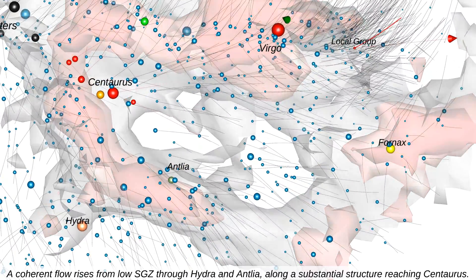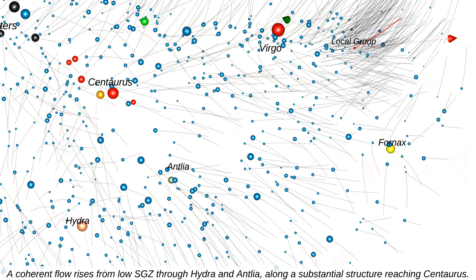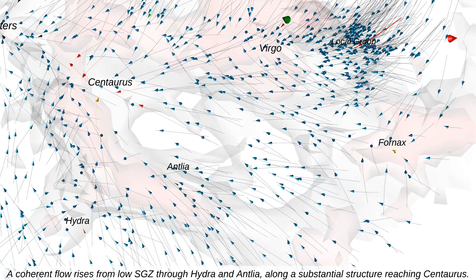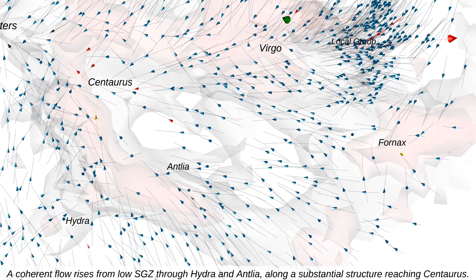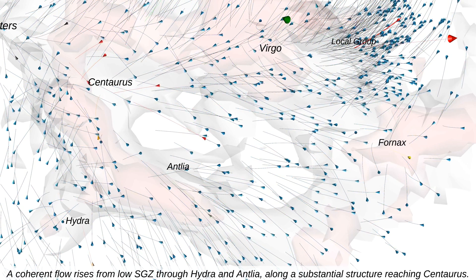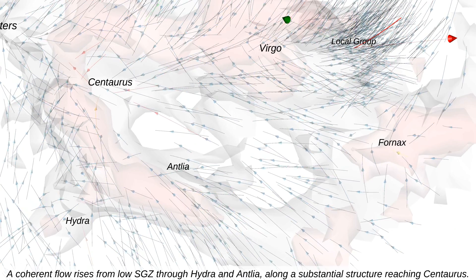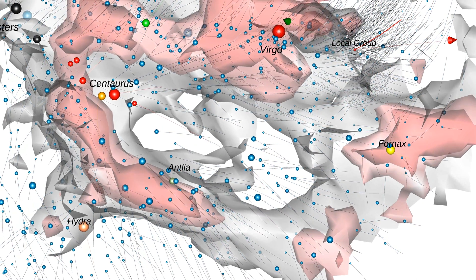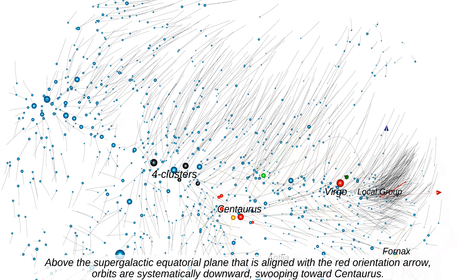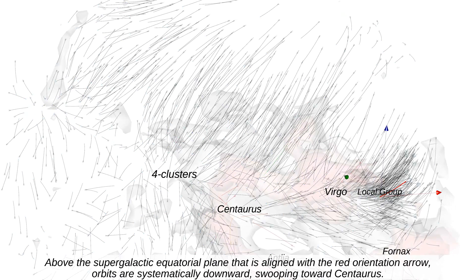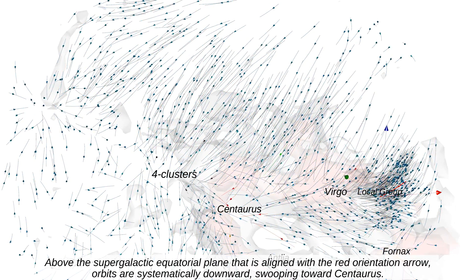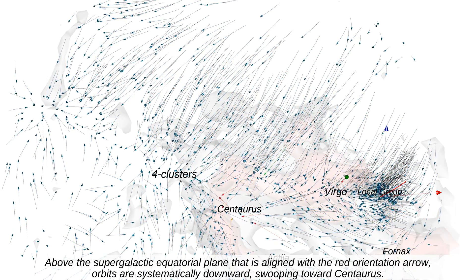A coherent flow rises from low SGZ through Hydra and Antlia along a substantial structure reaching Centaurus. Above the supergalactic equatorial plane — aligned with the red orientation arrow — orbits are systematically downward, swooping toward Centaurus.